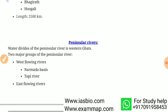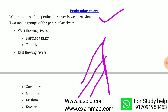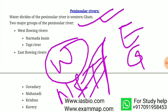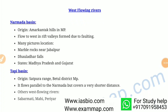Peninsular rivers have their water divide at the Western Ghats, which divides the rivers of the peninsular region into two major groups: west flowing and east flowing. West flowing rivers are Narmada and Tapi, and east flowing rivers are Godavari, Mahanadi, Krishna, and Kaveri. The Narmada has its origin in the Amarkantak hills in Madhya Pradesh.